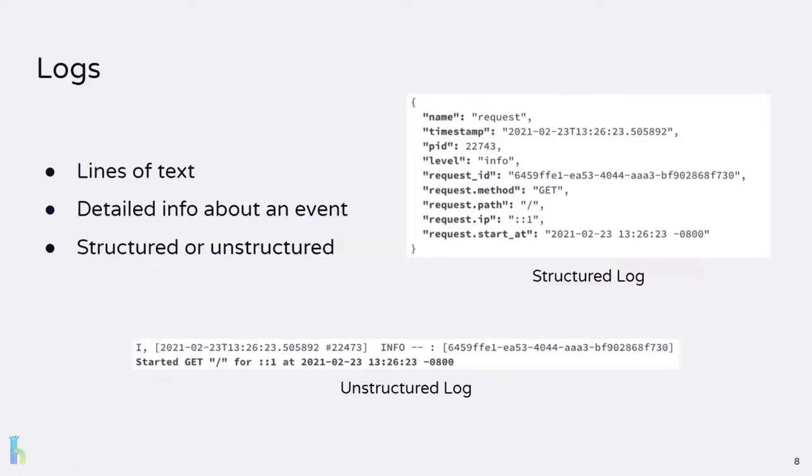Logs are just lines of text. They provide human-readable, specific, detailed information about an event. Logs can often be errors or any event — for example, completing a processing step. Often logs are structured to be easily parsed by machines, for example in JSON. They're great for providing fine-grained, detailed information originating from a single application.